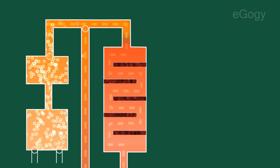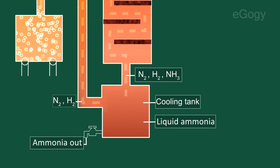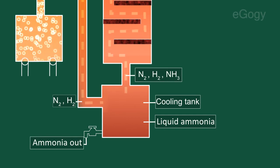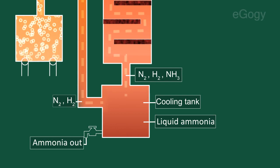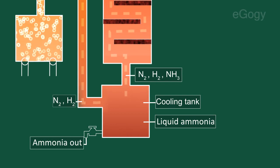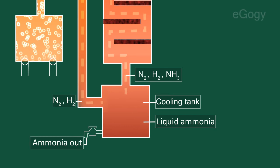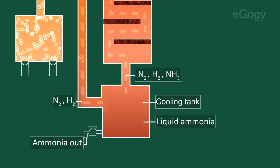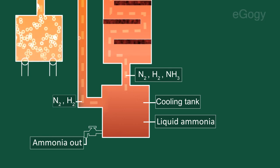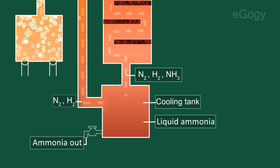When the gases leave the reactor, they are hot and at very high pressure. Ammonia is easily liquefied under pressure as long as it's not too hot, so the temperature of the mixture is lowered enough for the ammonia to turn into a liquid.